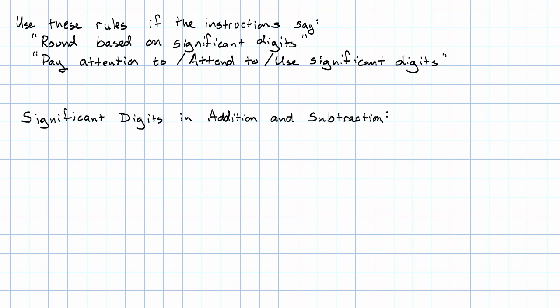In addition and subtraction, we're lining up place values. Because of that, what we really want to pay attention to when we're thinking about rounding is that we don't take credit for more places than we're entitled to.